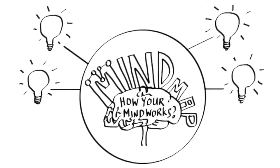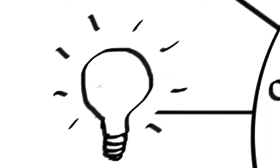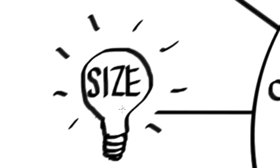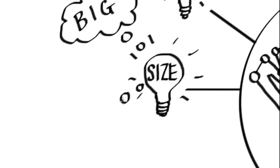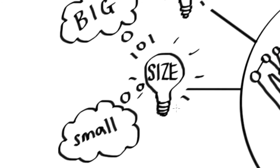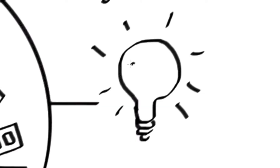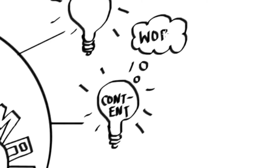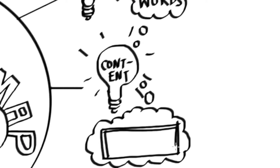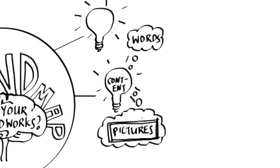But how can we make our mind maps easy to read? We can use categories to group ideas of a similar nature together. Here, we may categorise ideas on what size we want our mind map to be — it can be big or small. Having categories may help induce more ideas and thoughts in a particular direction too. When we think of how we may want to present the content of our mind map, we can think of ideas like words, pictures, or a mixture of both.